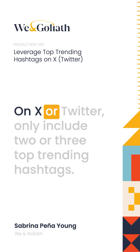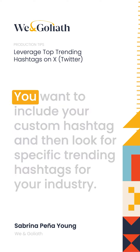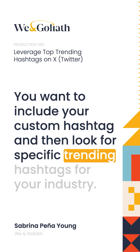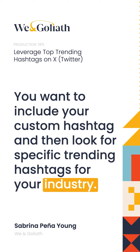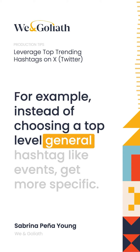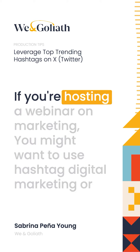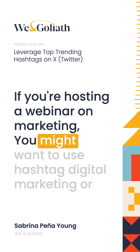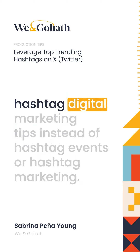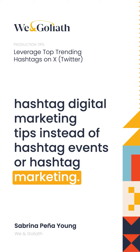On X or Twitter, only include two or three top trending hashtags. You want to include your custom hashtag and then look for specific trending hashtags for your industry. For example, instead of choosing a top-level general hashtag like #events, get more specific. If you're hosting a webinar on marketing, you might want to use #digitalmarketing or #digitalmarketingtips instead of #events or #marketing.